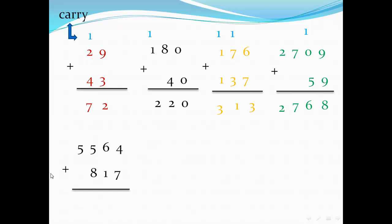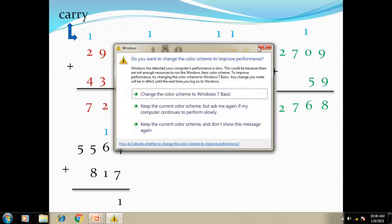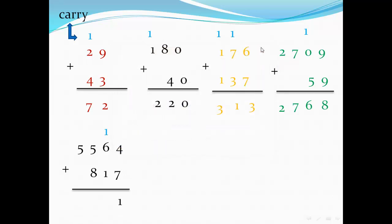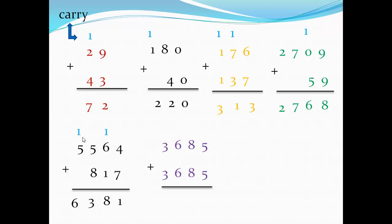Four digits plus three digits: start from ones — four plus seven equals eleven, write one and carry one to the next digit. One plus six equals seven; seven plus one equals eight; five plus eight equals thirteen, write three and carry one. One plus five equals six.